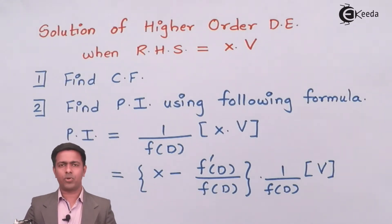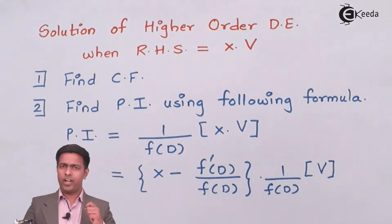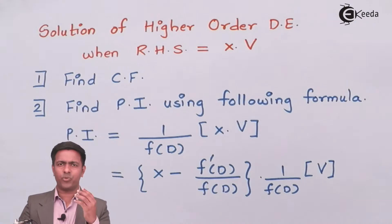Now what is step number two? In step number two we will find out the particular integral. To find out the particular integral, we have a formula which we have to apply to get the particular integral if your right-hand side is x into some function of x, or x into V.